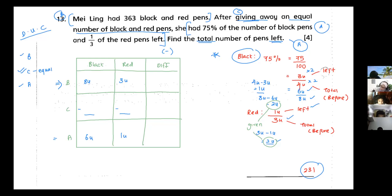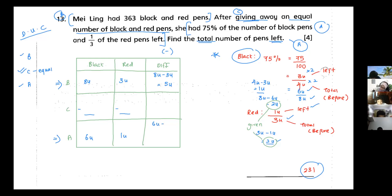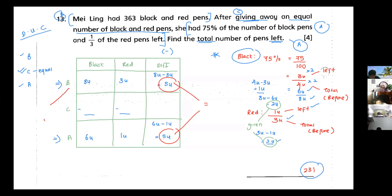The difference for before: 8 units minus 3 units equals 5 units. The difference for after: 6 units minus 1 unit equals 5 units. The difference is unchanged — this confirms it's the different unchanged concept. The check passes.